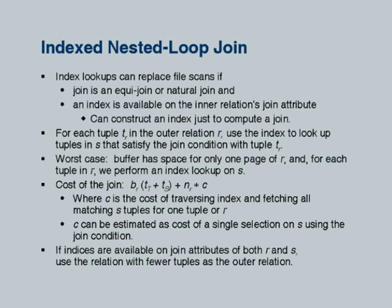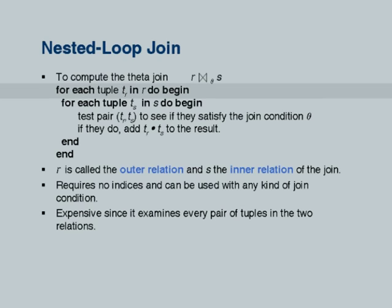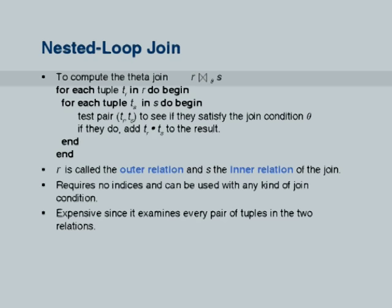Nested loops by itself is very inefficient, but there is an efficient variant called index nested loops. What does index nested loops do? The outer loop is identical in index nested loops — I go over each tuple of the outer relation. For the inner relation, I do not do a file scan. Instead what I do is I use an index.